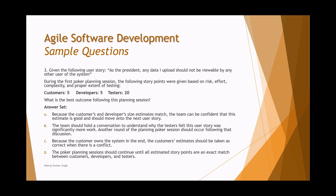Option A says that because customers and developers match, the team can be confident and move on to the next user story. However, in agile's collaborative approach, testers have equal contribution, and the team must discuss why testers felt the story required significantly more effort. Option B says the team should hold a conversation to understand the tester's concern, and another round of planning poker should occur after that discussion. That is the real approach — whenever you get unsynchronized numbers, you discuss and then conduct a second round of estimation. So B is correct.